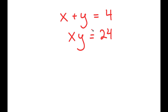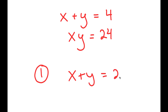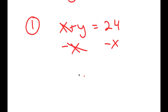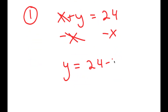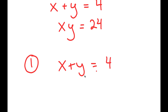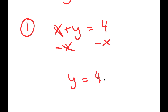So at first glance this might seem simple, but it's actually a lot more complicated. I'm going to first start by using my first equation and solving for y. My first equation is x plus y equals 4, and to solve for y I'm going to subtract x on both sides, so I get y is equal to 4 minus x.